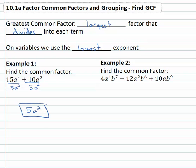Similarly, if we had 4a to the fourth b to the seventh minus 12a squared b to the sixth plus 10ab to the ninth, we're looking for the greatest common factor that we can divide all three terms by.